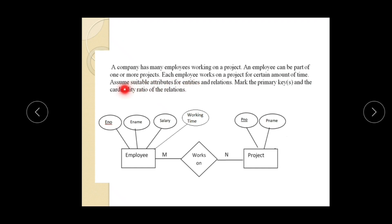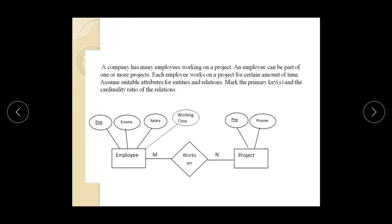Suitable attributes assumed: for employee — employee number (primary key), employee name, salary; for project — project number (primary key), project name. The cardinality ratio is many to many. These questions are collected from previous university question papers of the 2015 scheme and are repeatedly asked. Please go through these questions during your preparation of module 1. Thank you.